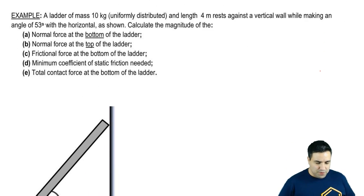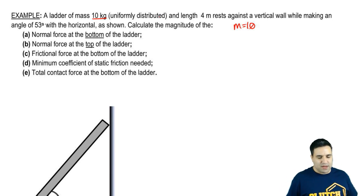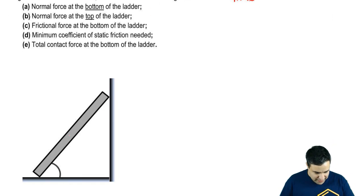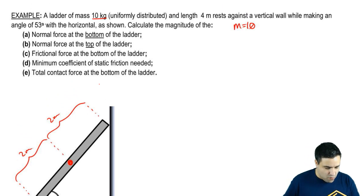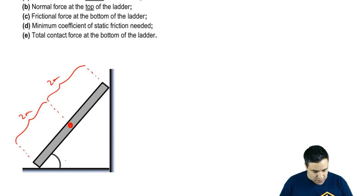So let's check out this problem here. We have a ladder of mass 10 kilograms, so m equals 10, and it's uniformly distributed. What that means is that the mg of the ladder will act right at the middle. So I'm going to do this here and say this is 2 meters, and this here is 2 meters as well.